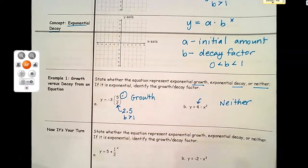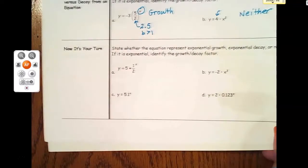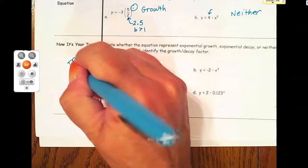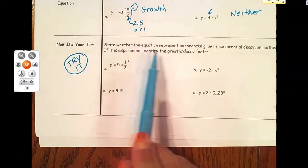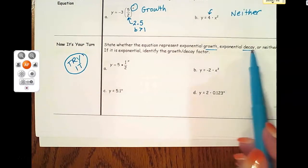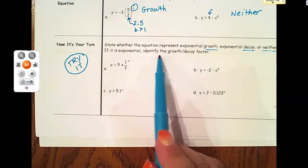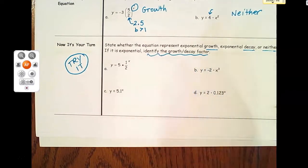Now it's your turn with the try it problems. Go ahead and pause the video. These are going to be just like the teacher led example, and we're going to state whether it's growth, decay, or neither. Then identify the growth and decay factor if it is one of those.